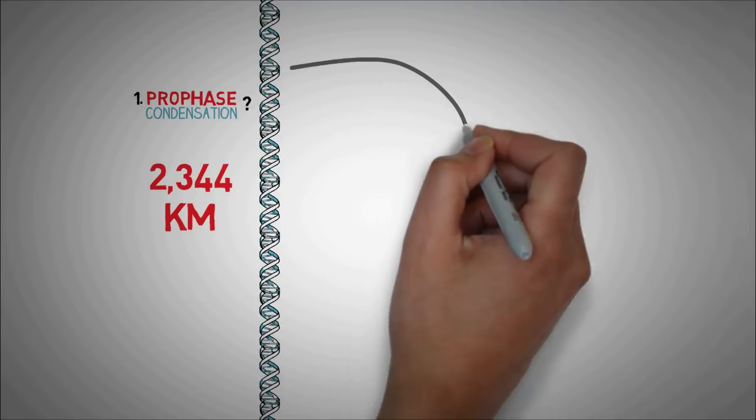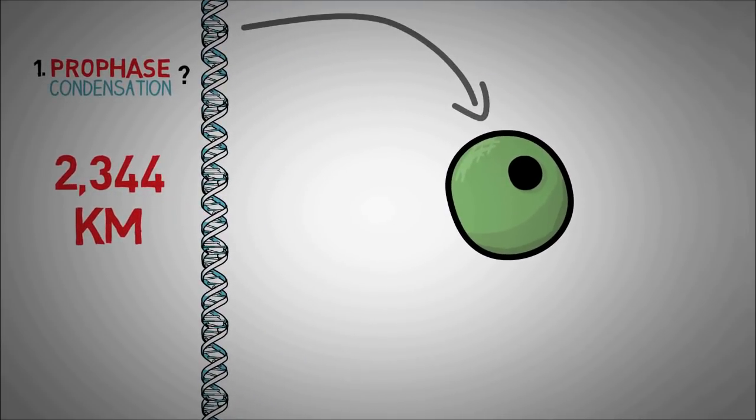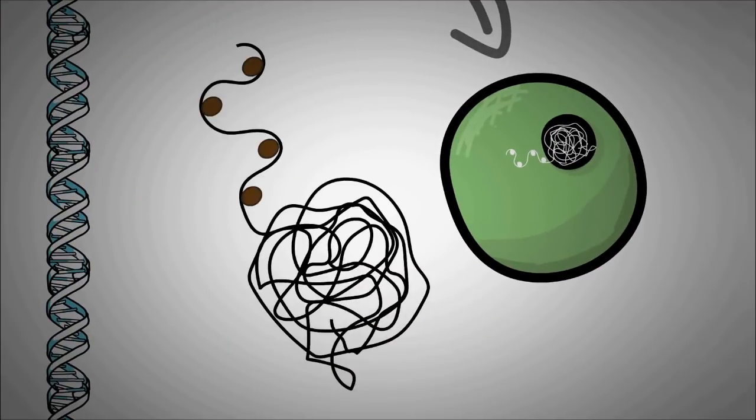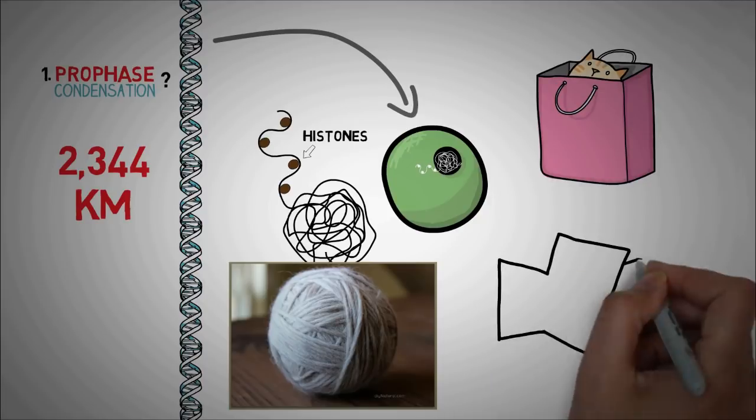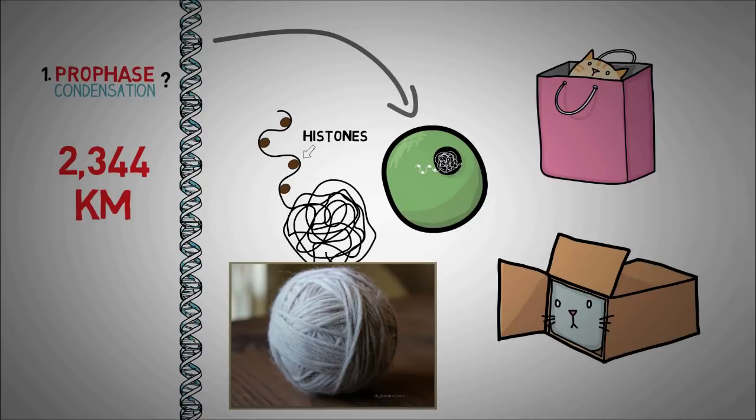And to achieve this, our nucleus packs the DNA. Not in suitcases of course, but it packs the DNA around special structures in the nucleus like histones. This can be compared to winding a woollen thread in a ball-like manner which allows a really long thread to fit in a small place.